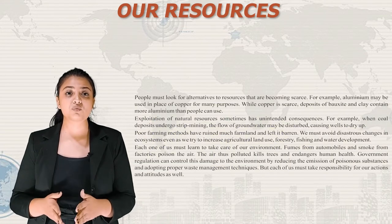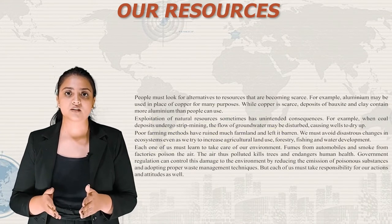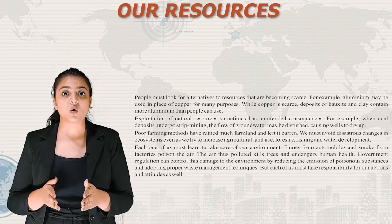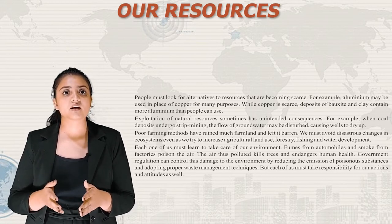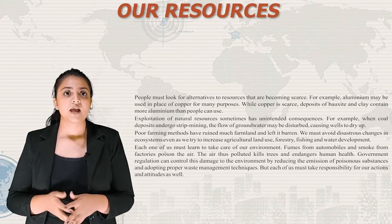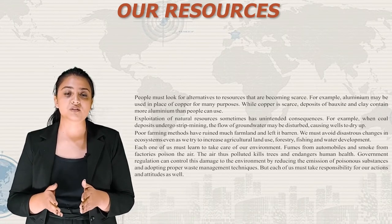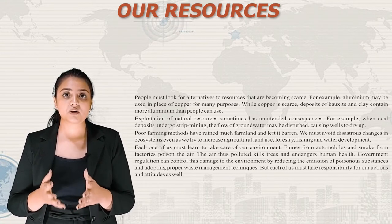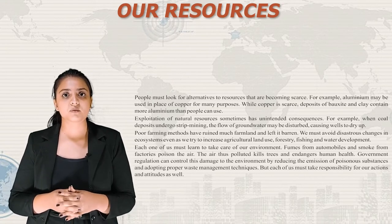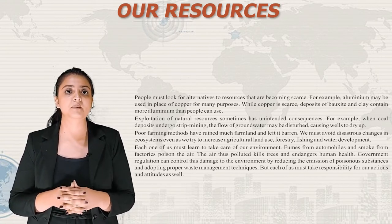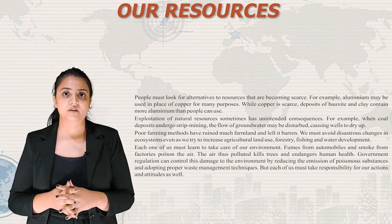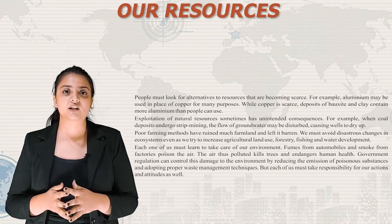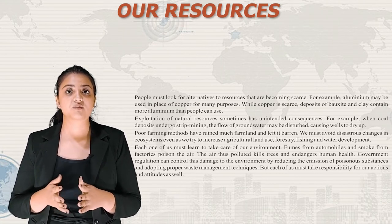People must look for alternatives to resources that are becoming scarce. For example, aluminium may be used in place of copper for many purposes — while copper is scarce, deposits of bauxite and clay contain more aluminium than people can use. Exploitation of natural resources sometimes has unintended consequences: strip mining of coal can disturb the flow of groundwater, causing wells to dry up. Poor farming methods have ruined much farmland. We must avoid disastrous changes in ecosystems even as we try to increase agricultural land use, forestry, fishing and water development.